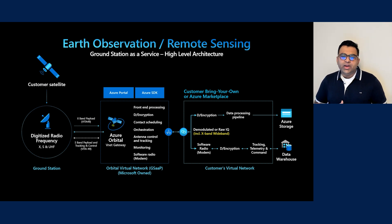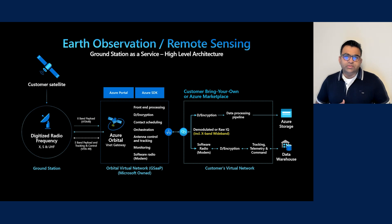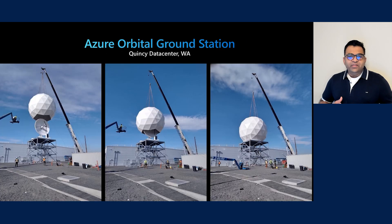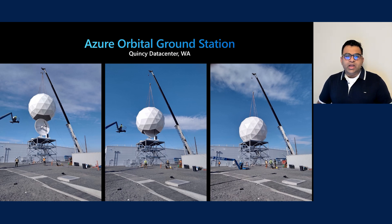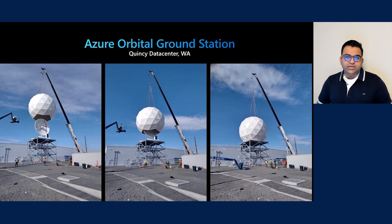Orbital can also provide fully digitized wideband raw signal — that is raw IQ — to the customers for processing for unique scenarios. We have been heads down building our own ground stations in our data centers. This is our first ground station at our Quincy data center in the state of Washington, housing two 6.1 meter antennas supporting X, S, and UHF bands.